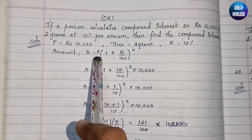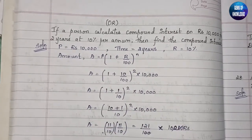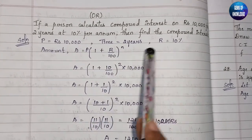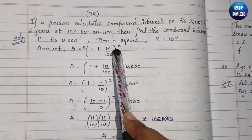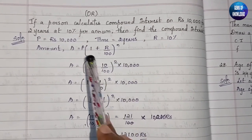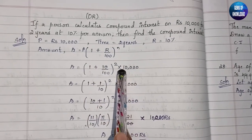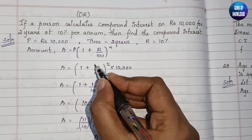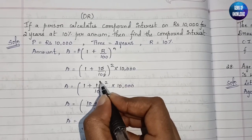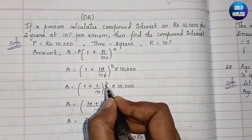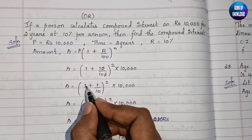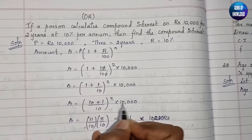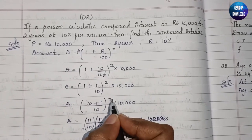Substituting the values: A = 10,000 × (1 + 10/100)². The 10 and one zero from 100 cancel, leaving 1/10 remaining. So A = 10,000 × (1 + 1/10)². Cross multiplying inside the bracket: 10×1 + 1 over 10 gives 11/10. Squaring it: (11/10)² = 11/10 × 11/10.